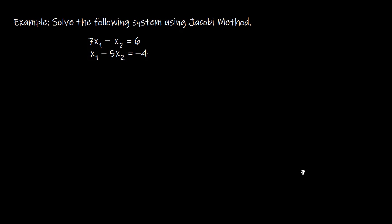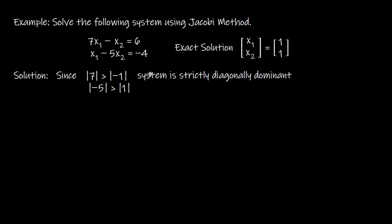Let's understand this algorithm with an example: 7X1 − X2 = 6 and X1 − 5X2 = −4. This system has the exact solution X1 = 1 and X2 = 1. The system is strictly diagonally dominant because the absolute value of 7 is greater than the absolute value of −1, and the absolute value of −5 is greater than the absolute value of 1. So the Jacobi method will surely converge to X1 = 1, X2 = 1.